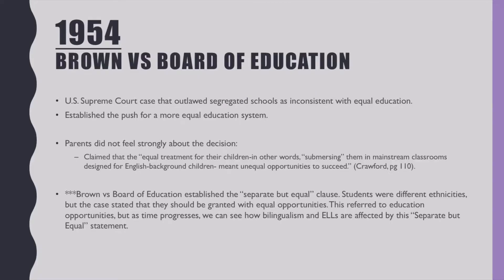The first court case we will be looking at is Brown v. Board of Education. In 1954, the U.S. Supreme Court outlawed segregated schools as inconsistent with equal education. It established the push for a more equal education system. Parents did not feel strongly about this decision because it claimed that equal treatment for their children, or submersing them in a mainstream classroom designed for English background children, meant unequal opportunities to succeed.